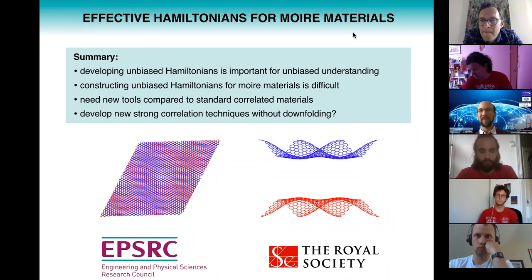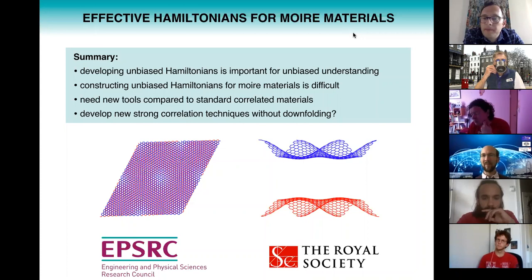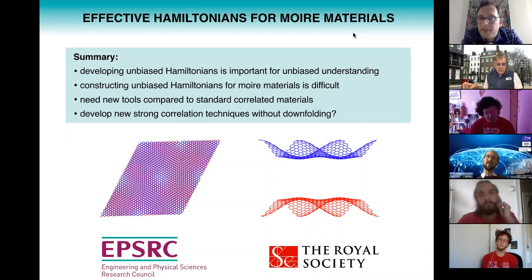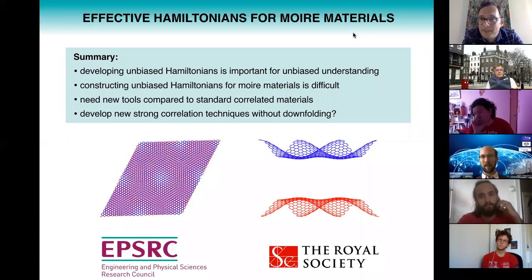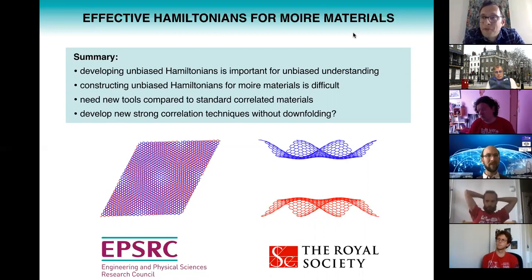A final question from the audience: how can real-space tight binding models help understand topological edge states in moiré materials, particularly given the recent observation of the quantum anomalous Hall effect? The speaker answers that many topological insulators are studied with hopping models like tight binding and DFT — for example, the Kane-Mele work on graphene used essentially a tight binding model to understand topological properties. With 10,000 atoms in a unit cell you can still construct edge states — as long as you can diagonalize the matrix, which is quite straightforward on a large enough computer.